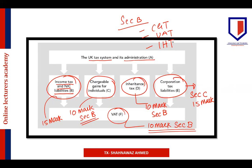CGT, value-added tax, and inheritance tax are the key Section B topics. Inheritance tax is quite a small topic, so it is a better idea to cover these small topics thoroughly to score maximum marks. CGT is comparatively a more detailed and lengthy topic.